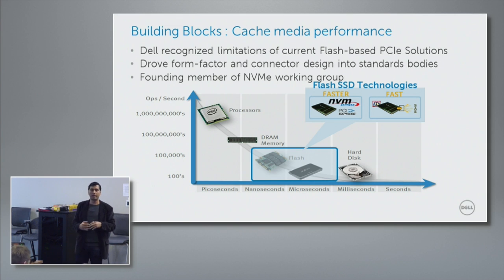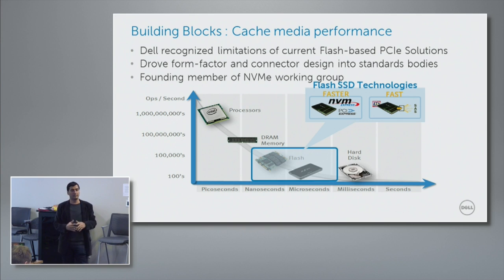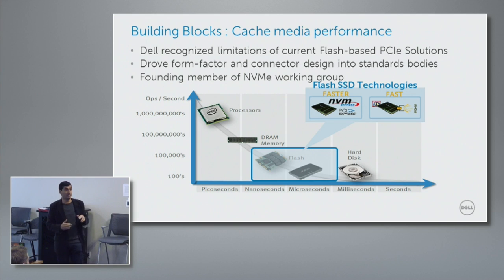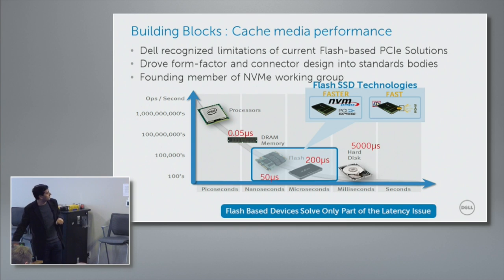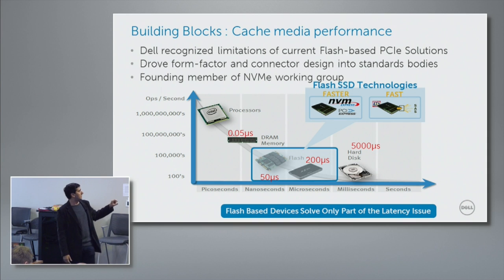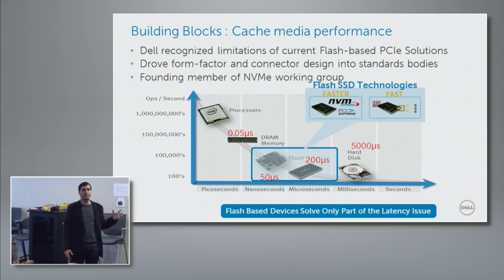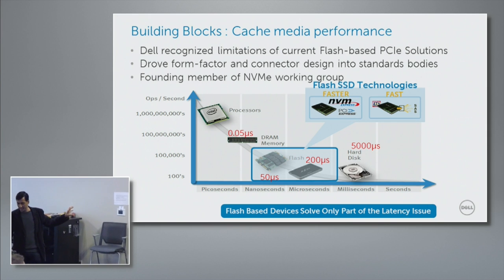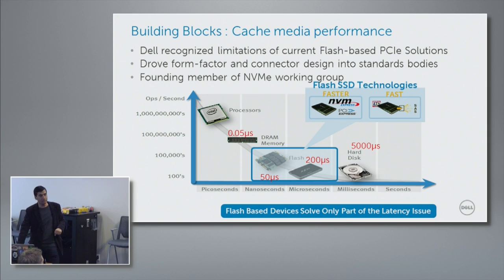As you cache data in lower-latency mediums — such as the processor itself — application IOPS go higher. If there were a future where every bit of data could stay inside the processor, you'd be talking billions of IOPS. Until then, in Fluid Cache we use PCI SSDs as our cache medium, which gives latency in microseconds. That's one of our key building blocks.